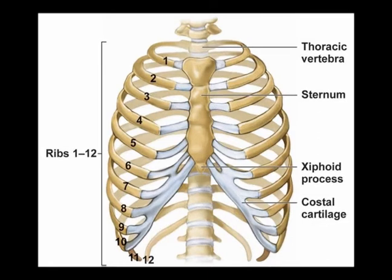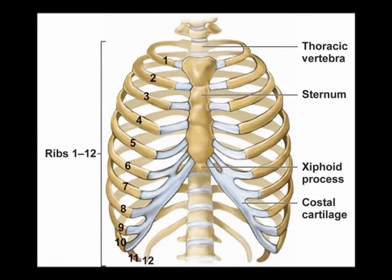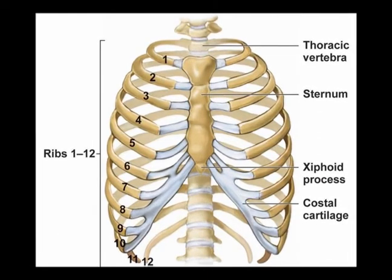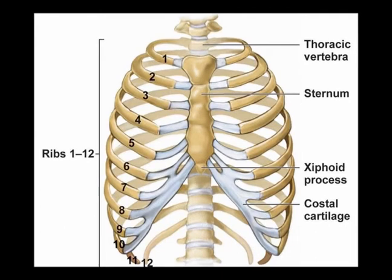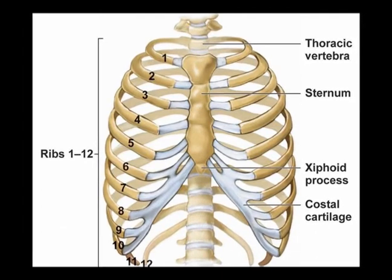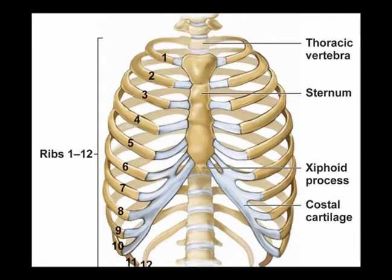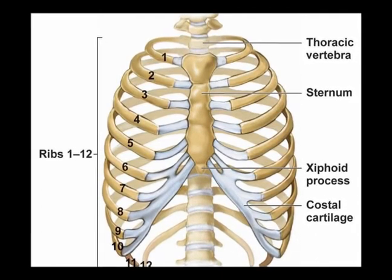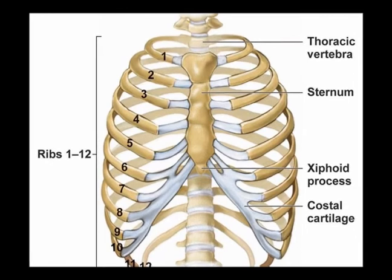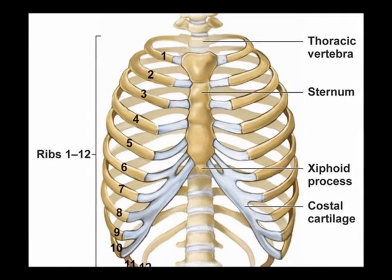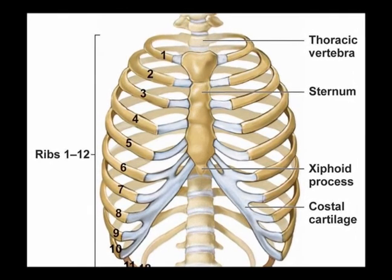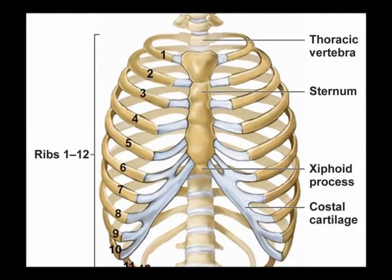Now ribs number 11 and 12, those are the floating ribs. They do not attach to the sternum directly or indirectly. They originate on the vertebrae and they wrap around, but they do not attach to the sternum.